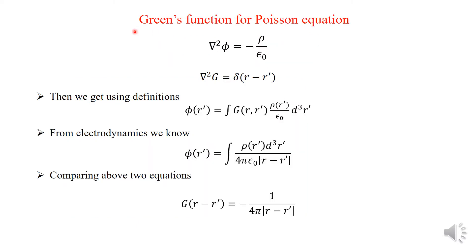Before going into the detail of Green Function, we will see one of the main applications of Green Function in the well-known problem of the Poisson equation. We know very well that from Poisson equation, del squared phi equals minus rho over epsilon naught. I have explained that Green Function should be constructed in such a way that when the differential operator operates on the Green Function, it will give a delta function.